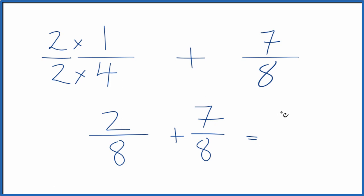2 plus 7 is 9, and then when we're adding fractions, if the denominator is the same, we can just bring that across, put it as 8. So 1 fourth plus 7 eighths, that equals 9 eighths.